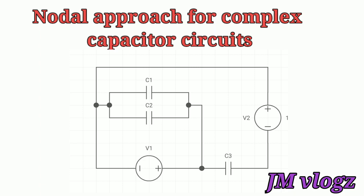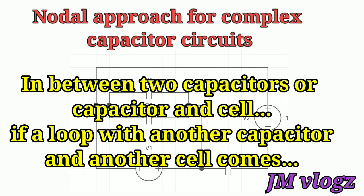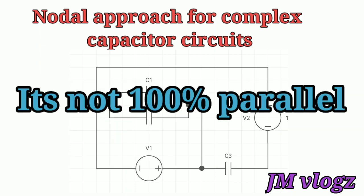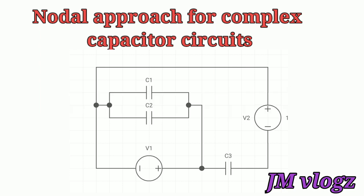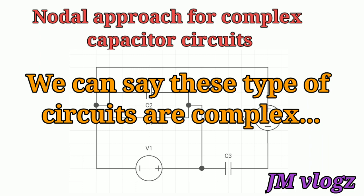Look at this figure — three capacitors C1, C2 and C3 are present, and these three capacitors are not in parallel. The reason is: if in between two capacitors, or between a capacitor and a cell, a loop with another capacitor and a cell appears, then we cannot say the circuit is 100% parallel. This type of circuit is a complex capacitive circuit.